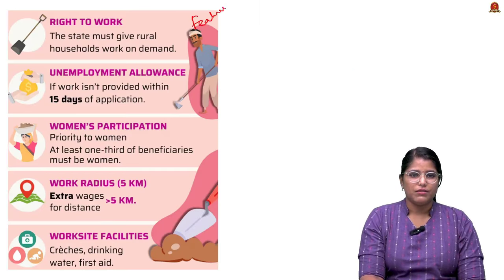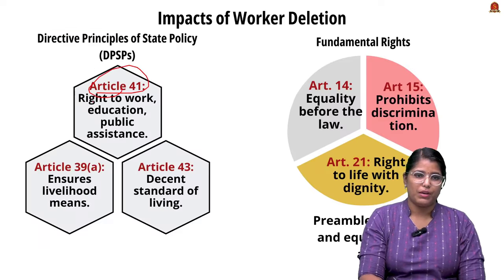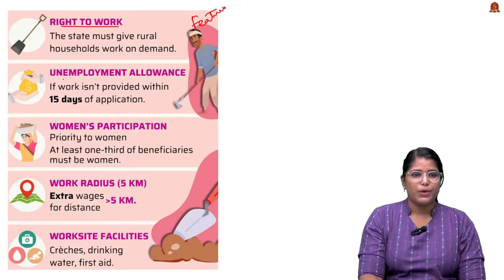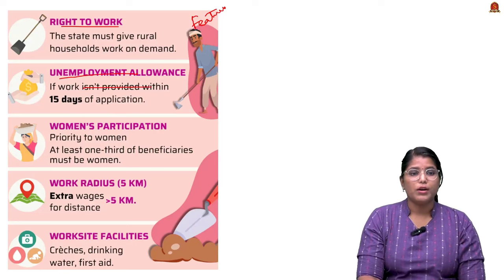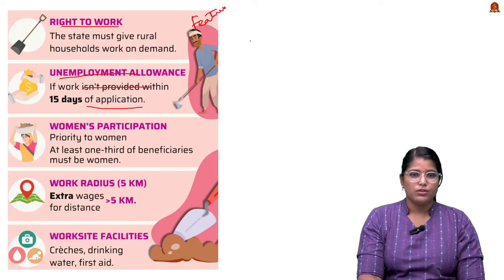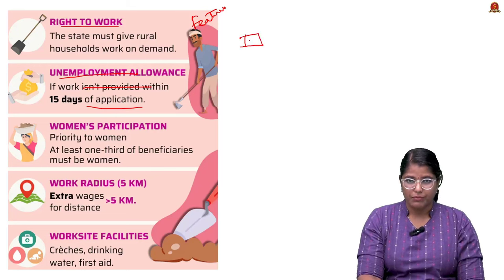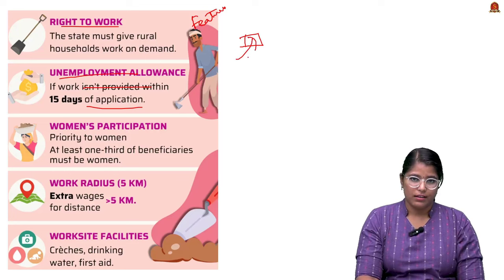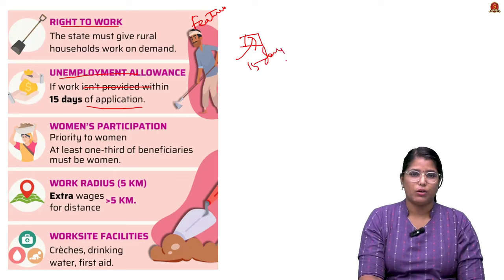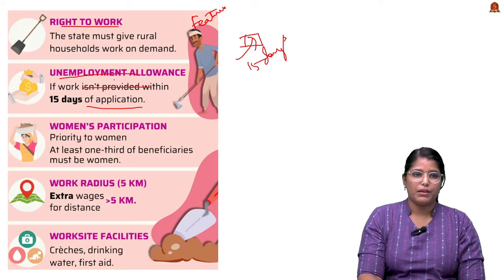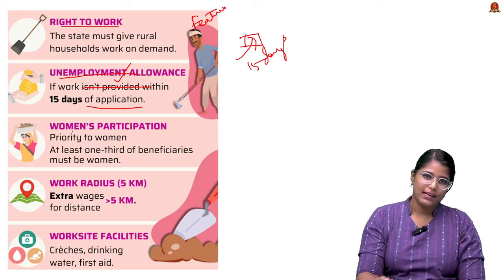The key features of the scheme: firstly, it provides the right to work, which is under Article 41 from the DPSP covering right to work, education, and public assistance. Secondly, it provides an unemployment allowance if work is not provided within 15 days of application. A person can apply on the dedicated website, and if work is not provided within 15 days, they receive an unemployment allowance — guaranteeing unskilled labour work within 15 days.